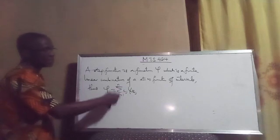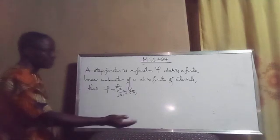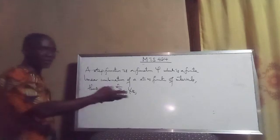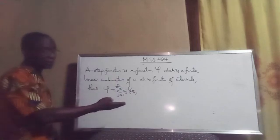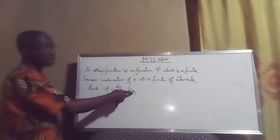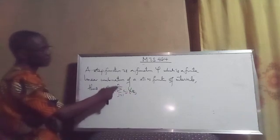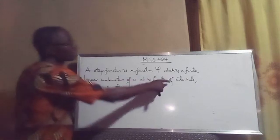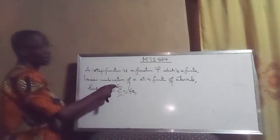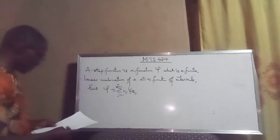We can write the step function as φ = Σ c_j · χ_{E_j}, where c_j is a real number — it could be a scalar or constant — and j is taken from 1 to N. That is why we call it a finite linear combination, with finite N.